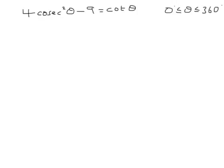Here is a trig equation which we can solve by using some identities — in fact the identity that 1 plus cot squared equals cosec squared. You can put that in straight away.